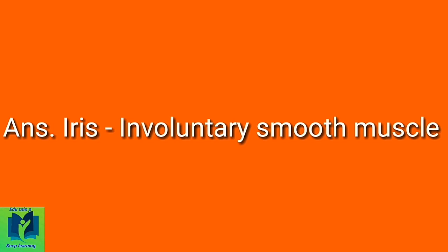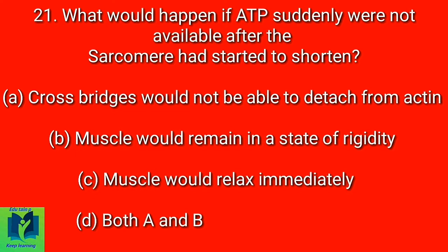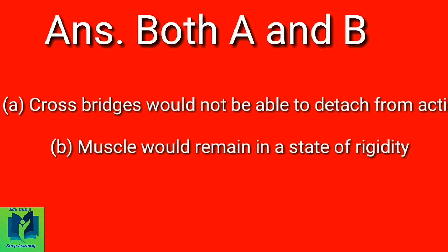What would happen if ATP suddenly were not available after the sarcomere had started to shorten? Option A: Cross bridges would not be able to detach from actin. Option B: Muscle would remain in a state of rigidity. Option C: Muscle would relax immediately. Option D: Both A and B. Answer: Both A and B.